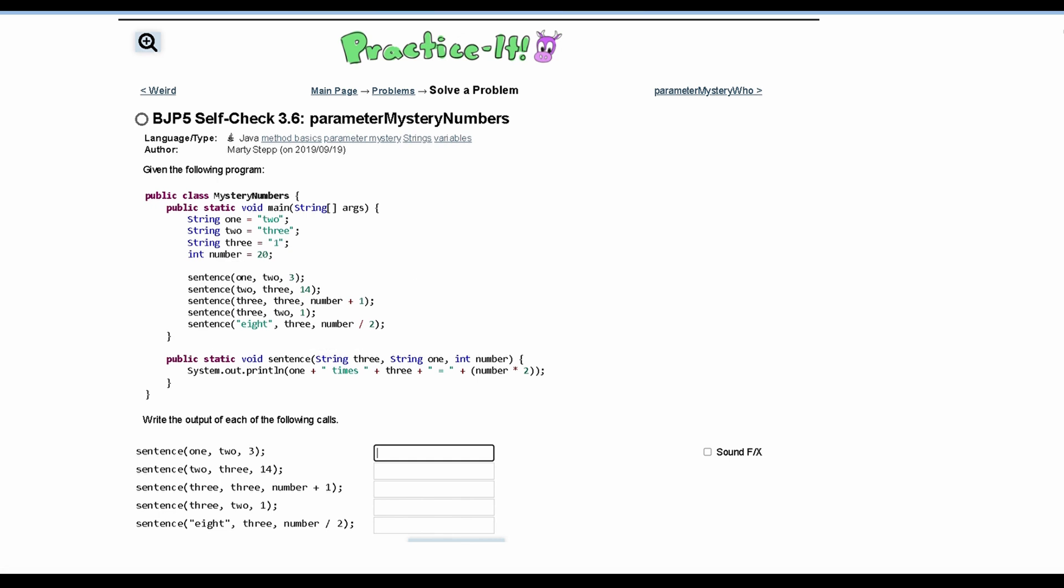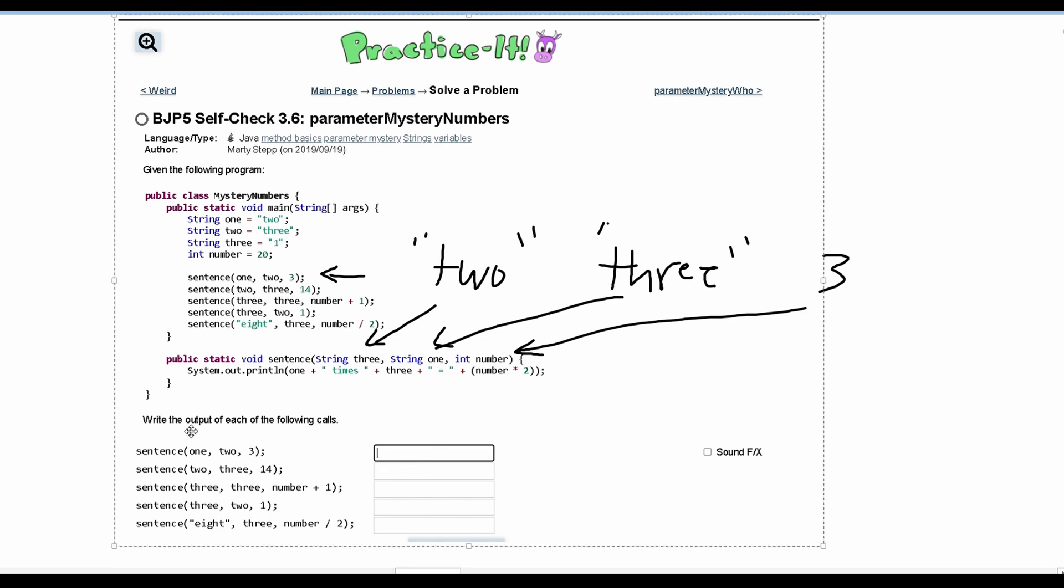First, we are going to look at this right here. We're passing in the strings 2 and 3 and then the number 3. So here is where we're going to have 2, here is where we're going to have 3, and then this is where we're having 3. So in our method, we are going to have 1, which stores 3.